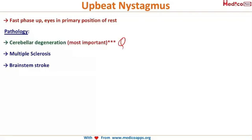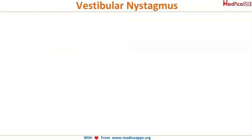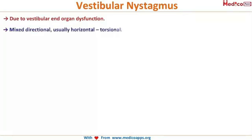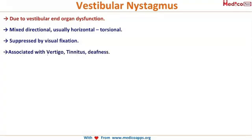Upbeat nystagmus is seen in cerebellar degeneration, multiple sclerosis, and brainstem stroke. Vestibular nystagmus is due to vestibular end-organ dysfunction. It is mixed directional, usually horizontal with a torsional component. It is suppressed by visual fixation and is associated with vertigo, tinnitus, and deafness. Causes include neuritis and Ménière's disease.